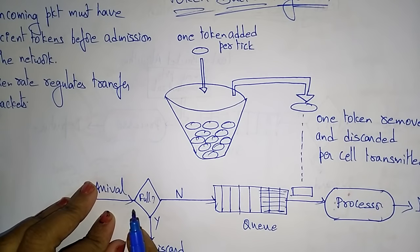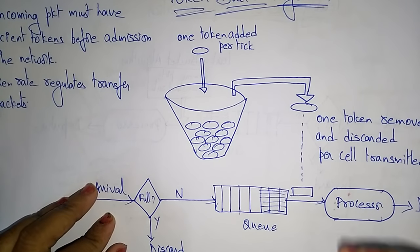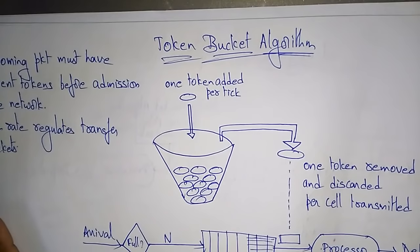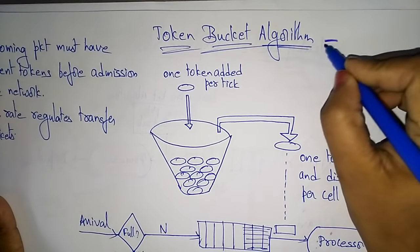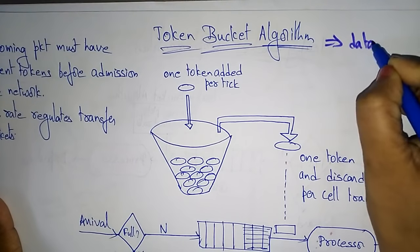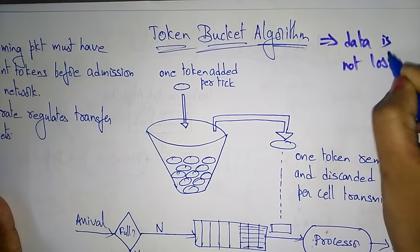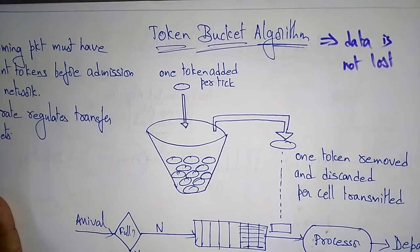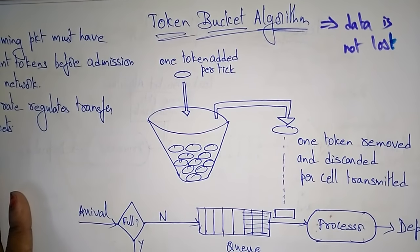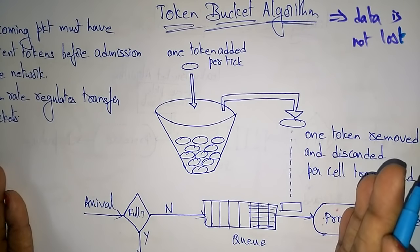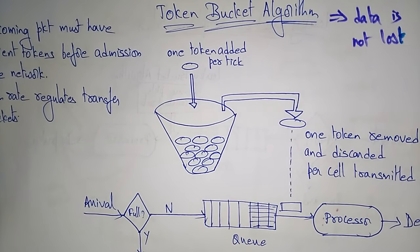We need a more flexible algorithm so that data is not lost. The main concept in the token bucket algorithm is that data is not lost — whatever data is being sent by the host computer will not be lost and will not overflow. That is the concept of the token bucket algorithm: to deal with bursty traffic. Whatever bursty traffic occurs in the leaky bucket will be overcome in the token bucket algorithm.